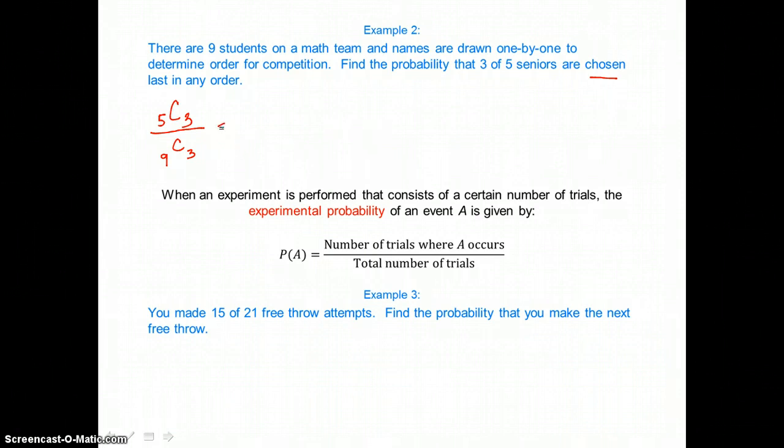So simplifying we're going to have to use our combination formula. The first combination in the numerator is 5 factorial divided by 5 take away 3, which is 2 factorial times 3 factorial. In the denominator we have 9 factorial divided by 9 take away 3, which is 6 factorial times 3 factorial. So we don't divide by a fraction, we multiply by its reciprocal instead. So I'm going to invert that denominator and multiply it to the numerator. So I have 6 factorial times 3 factorial on the top and 9 factorial on the bottom.